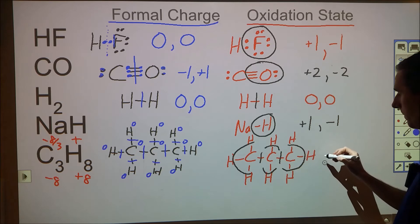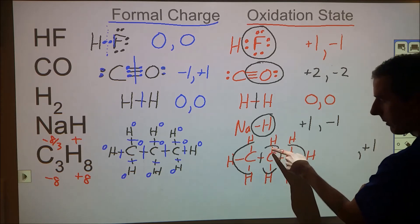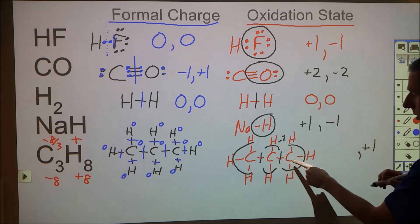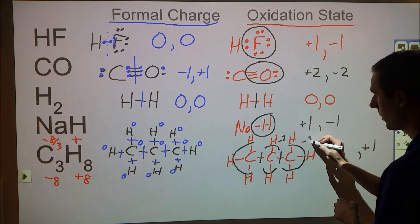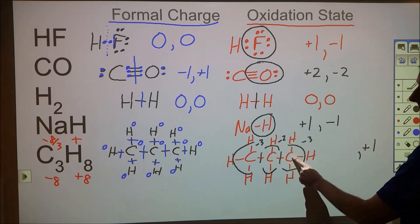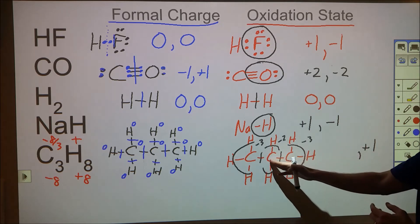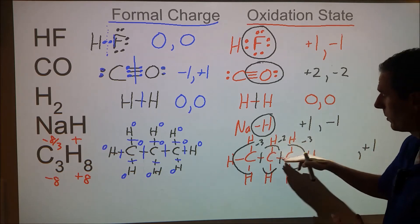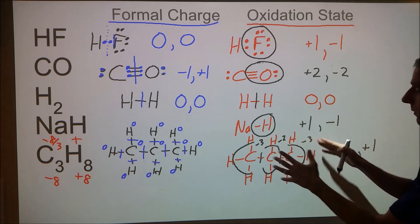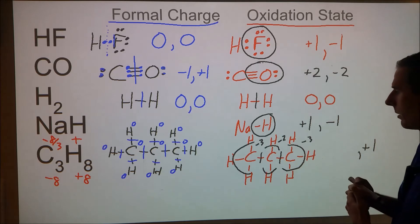Every hydrogen in C3H8 is +1. Counting electrons for the end carbons: each has six electrons and should have four, giving −2. The middle carbon has seven electrons, giving −3. The two end carbons are −2 and the middle is −3 — they average to −8/3, but they're electronically different. This reflects the real difference between primary and secondary carbons in organic chemistry.